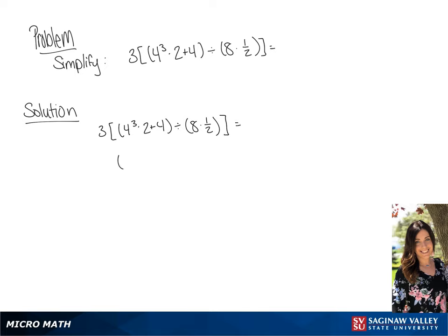If we simplify 4 cubed, we get 64 times 2 plus 4. And in the second set of parentheses, we will get 8 over 2.